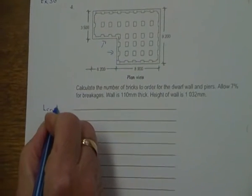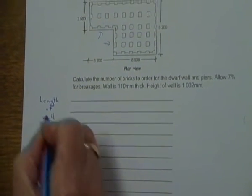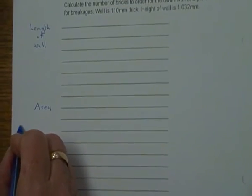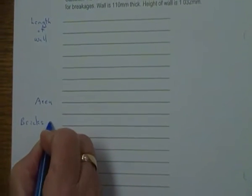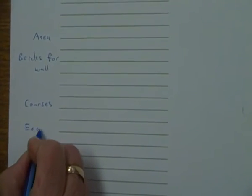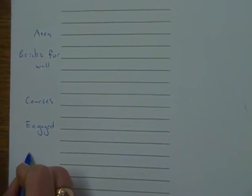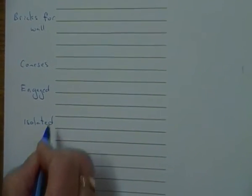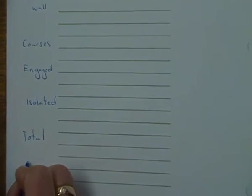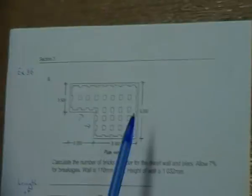I need to get the length of the wall, length of wall here. So I'm going to come down to here and then put in I need to get the area, then I need bricks for wall, then I'm going to think about getting my courses and then my engaged piers, engaged and then isolated, the total of the bricks, the total, and then I'm going to add my breakages.